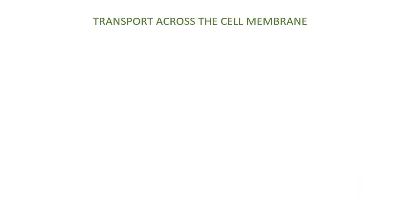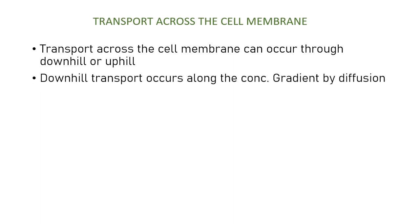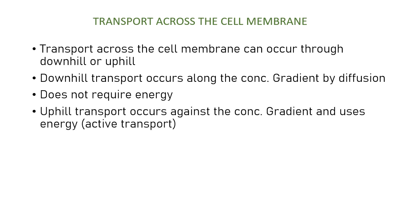Now let's talk about transport across the cell membrane. Transport can occur through downhill or uphill mechanisms. Downhill transport occurs along the concentration gradient by diffusion — from high concentration to low concentration — and requires no energy. Uphill transport occurs against the concentration gradient and requires energy, because the substance is being moved to a region of higher concentration.